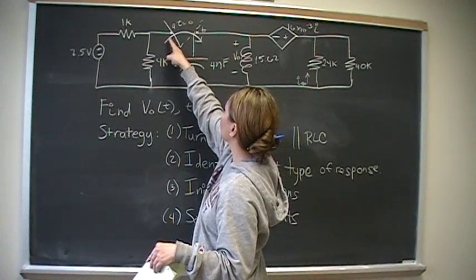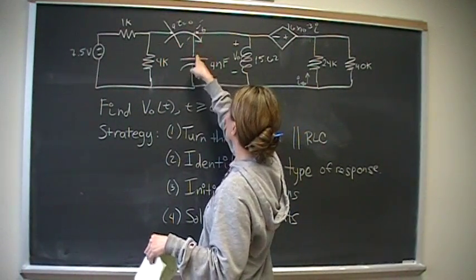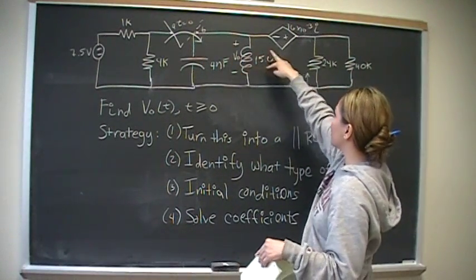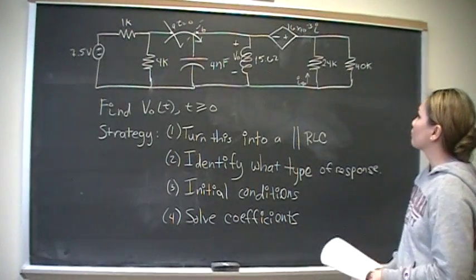Then after time 0, the switch flips to position B, and current starts to flow. The capacitor starts to release energy to the rest of the circuit.